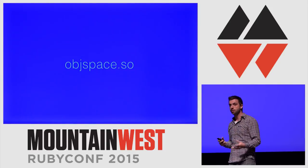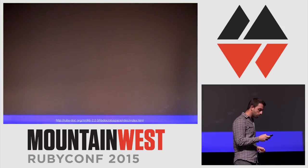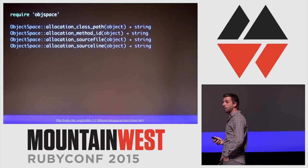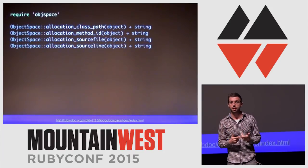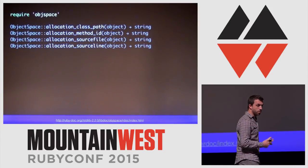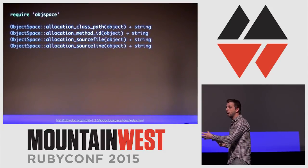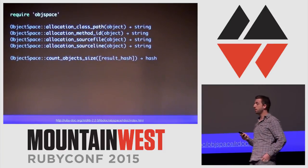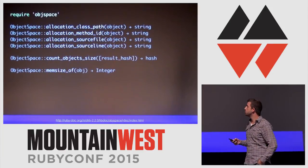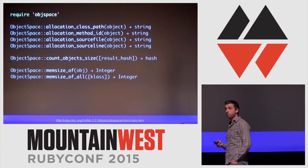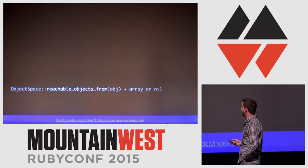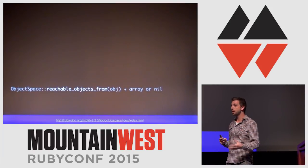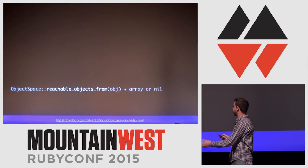There's also a lesser-known extension called ObjectSpace.so. This allows you to write code where, for any given object, you can tell what source line of code, source file, and source method that object was actually allocated from. You can also count objects and get a hash of byte sizes, get the memory size of an individual object, or the memory size of all objects of a particular class. You can also use reachable_objects_from, which tells you all objects that could potentially reference a given object.